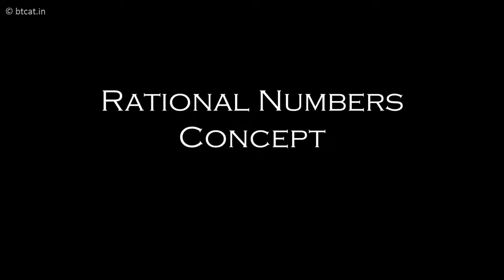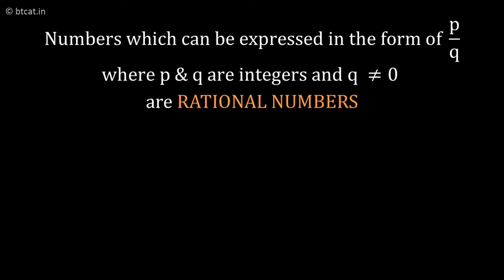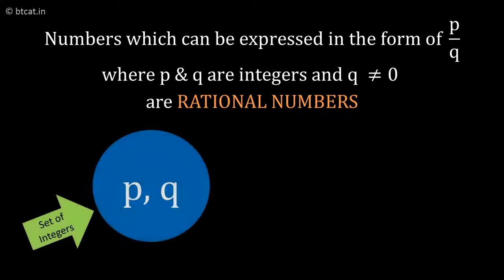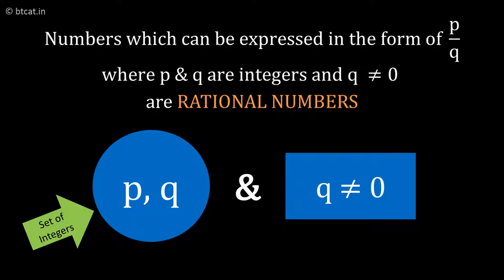Rational numbers are numbers which can be expressed in the form of p/q, where both p and q belong to the set of integers, and the denominator q should not be equal to zero.